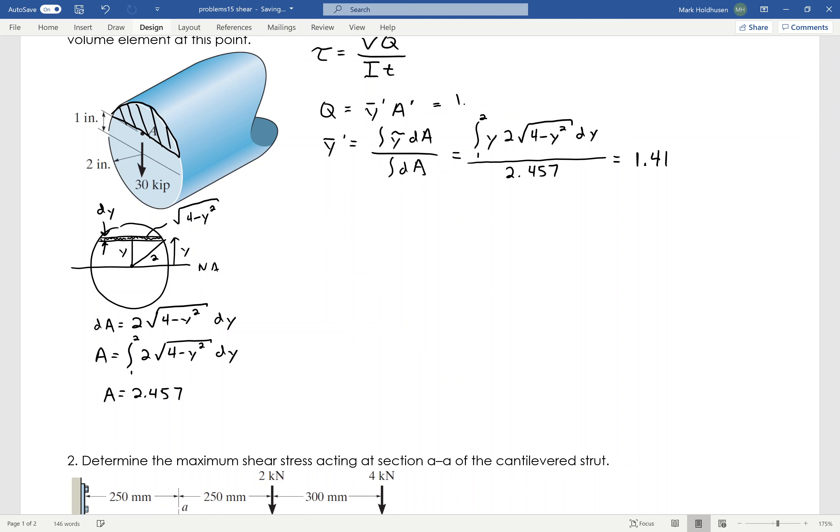So, then that Q then becomes 1.41 times 2.457 which equals 3.464.